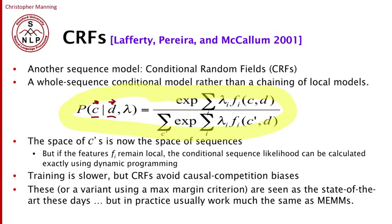And so we get this whole sequence conditional model, rather than a chaining of local models. That looks as if it would be very difficult to deal with, because the space of a sequence of C's is exponential in its length, and the space of a sequence of data items represented as features is at a minimum huge, and perhaps even infinite. But it turns out that providing the FI features remain local, permitting dynamic programming, that the conditional sequence likelihood can be calculated exactly.